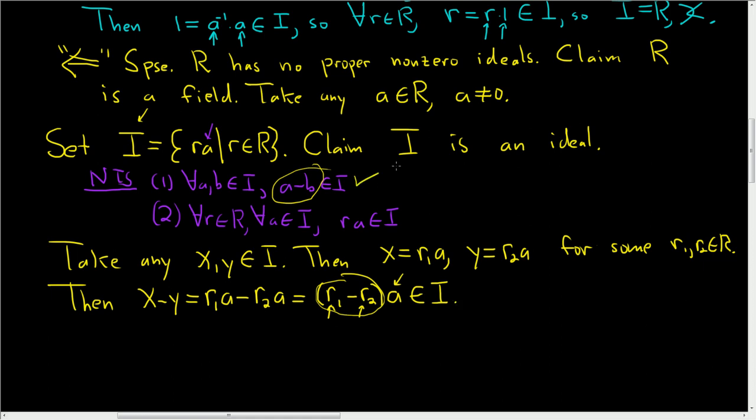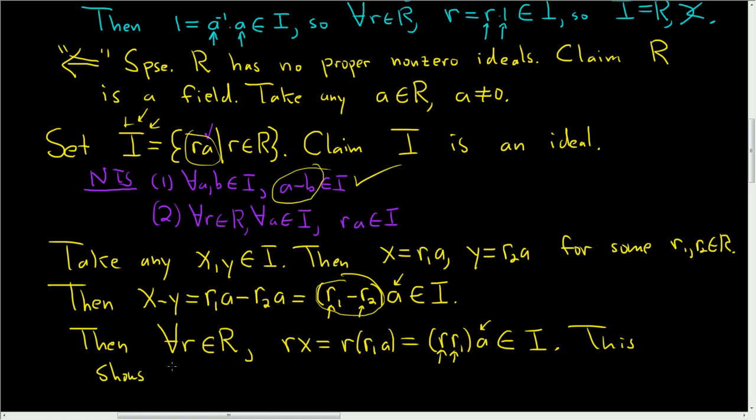So that takes care of the first part. For the next part, then for all R in R, we'll look at RX. Well, RX is R(R1A), and this is, using associativity, (RR1)A. Both of these guys are in R. R is a ring, it's closed under multiplication, so the product is in R, and this is A. So by definition of I again, this is also in I. So this shows I is an ideal.